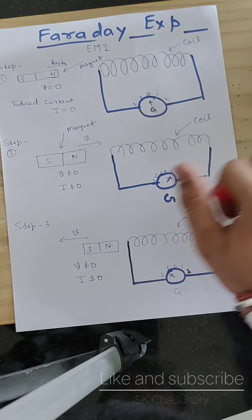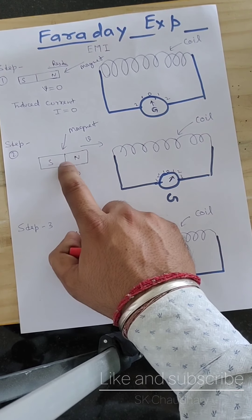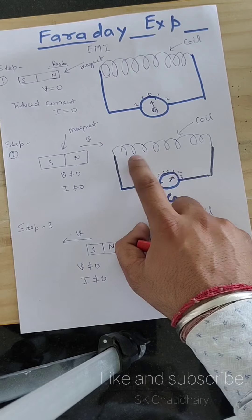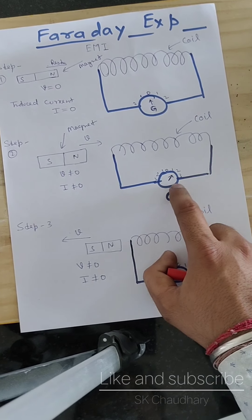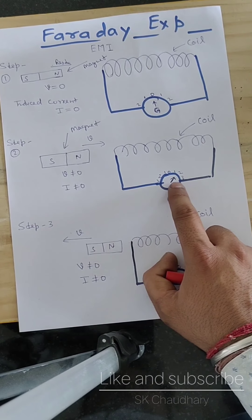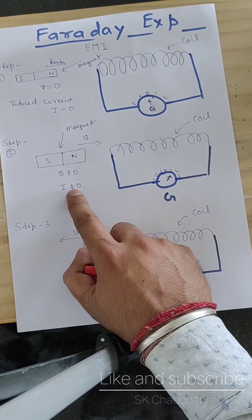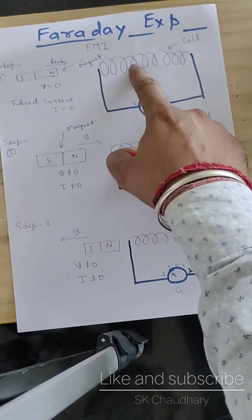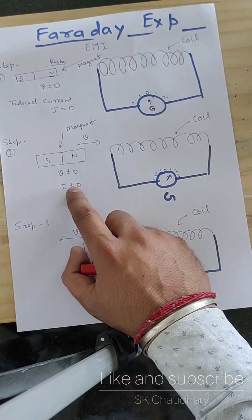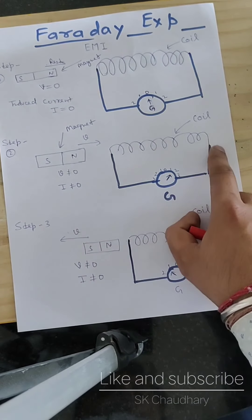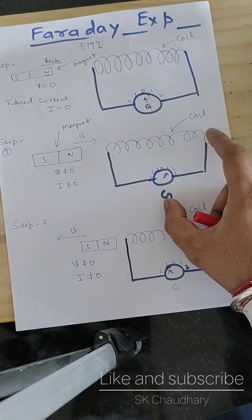In step two, we have the velocity of the magnet towards the coil where the galvanometer is connected. In step three, you can see that deflection of the galvanometer takes place. If deflection is taking place, then definitely there is a current. Initially there is no induced current inside the coil, but when we start to move the magnet, the galvanometer will show deflection. This means the coil has some type of induced current inside it.